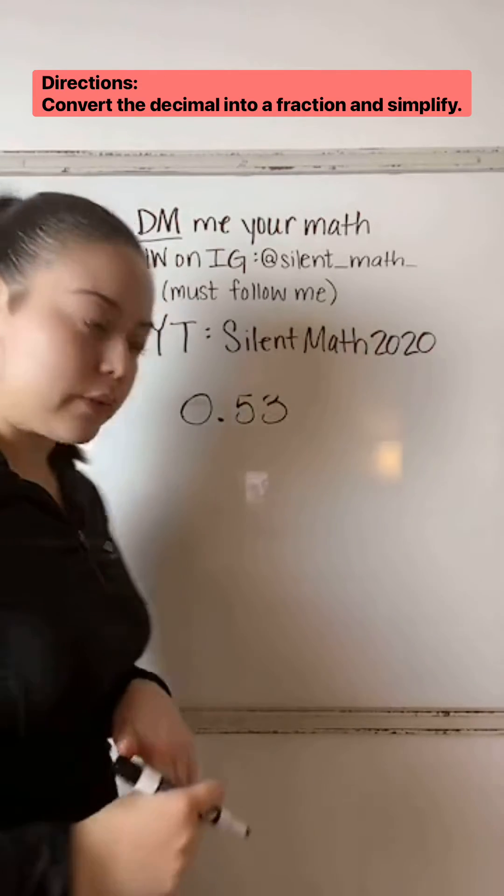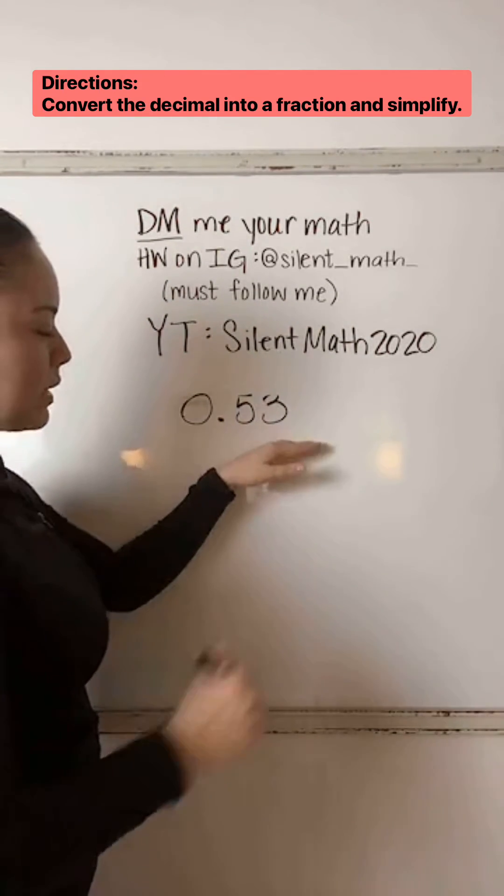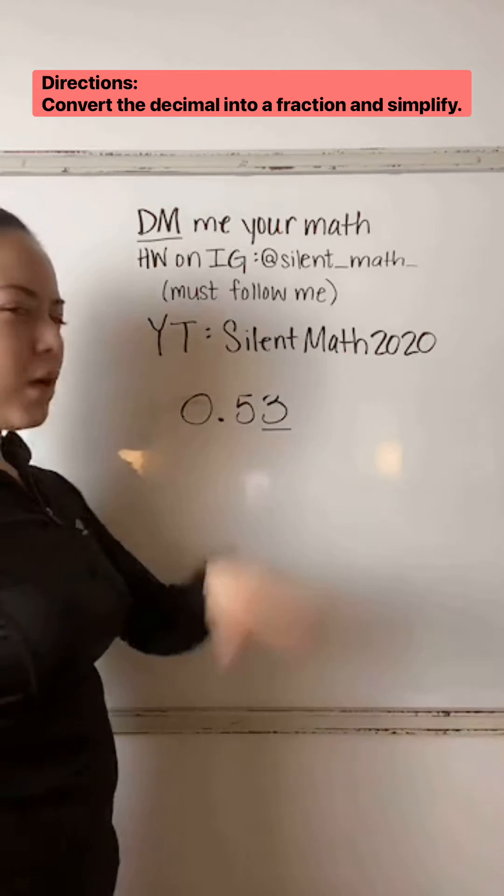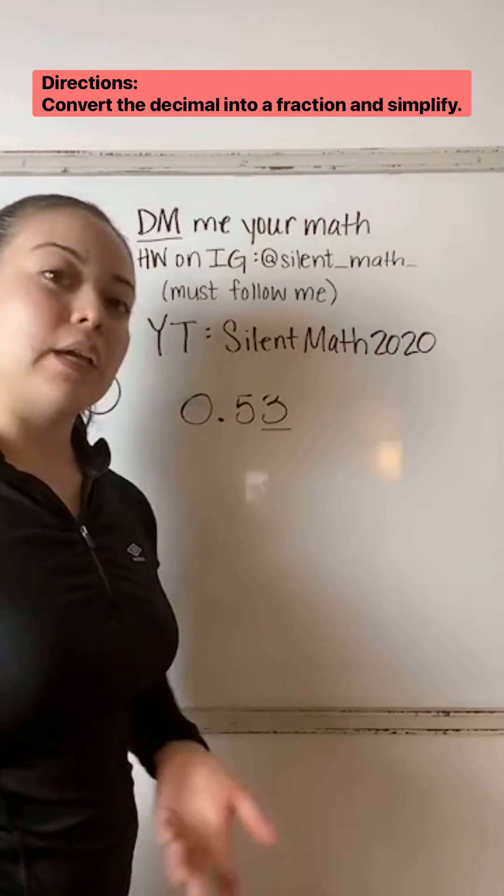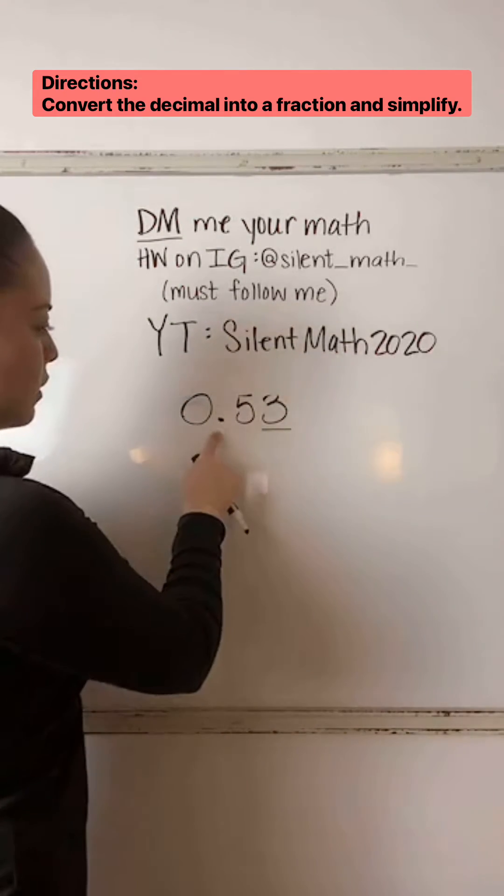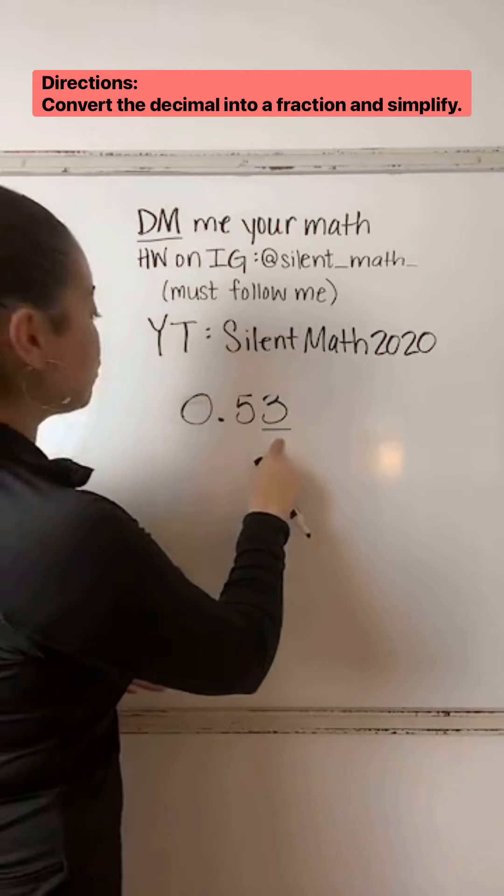You need to know your place value. So the very last digit is my three. What place value is your three at? Tenths, hundredths.